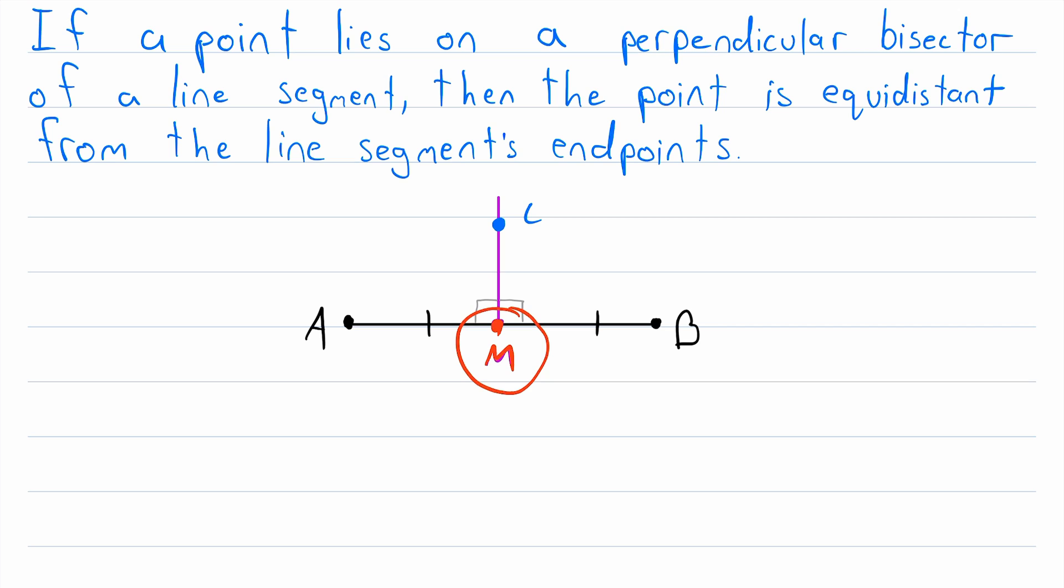If our point is the midpoint, then by definition, it is equidistant from A and B. So that's just one case of the theorem out of the way, easily proven.